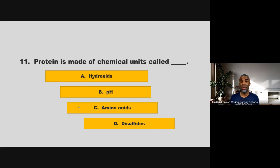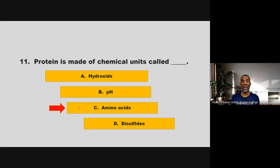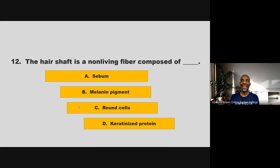Protein is made of chemical units called blank. Is it hydroxides, pH, amino acids, or disulfides? If you chose C, amino acids, you are correct.